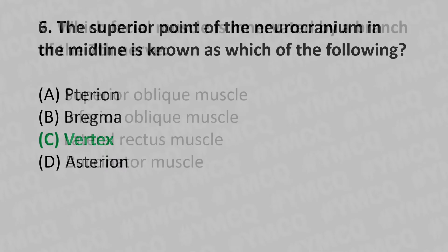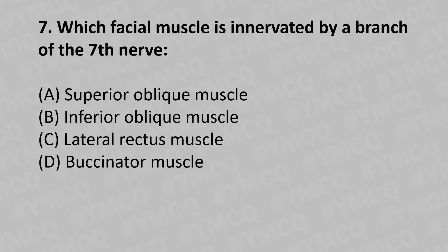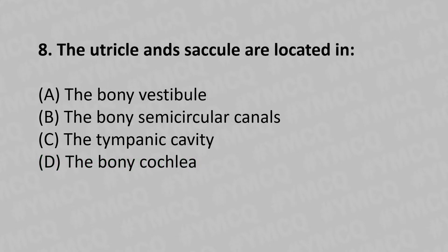Moving to our seventh question: which facial muscle is innervated by a branch of the seventh nerve? Option A: superior oblique muscle. Option B: inferior oblique muscle. Option C: lateral rectus muscle. Option D: buccinator muscle. Moving to our eighth question, options include: Option A: the bony vestibule. Option B: the bony semicircular canals. Option C: the tympanic cavity. Option D: the bony cochlea.